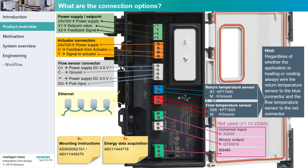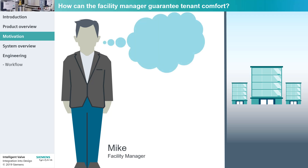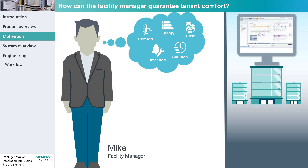Now that we have an overview of the Intelligent Valve, let's turn our attention to a real-life scenario. Mike is the facility manager of a campus consisting of three buildings. It's important to Mike that his building's HVAC systems provide the tenants with the desired comfort in an energy and cost-efficient manner. He wants to detect abnormal behavior of the HVAC systems immediately and solve problems as quickly as possible. Mike uses Dizigo CC, Siemens Building Management Software, for these purposes. Dizigo CC allows him to collect and analyze data and visualize runtime processes.